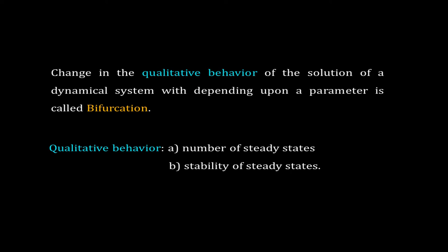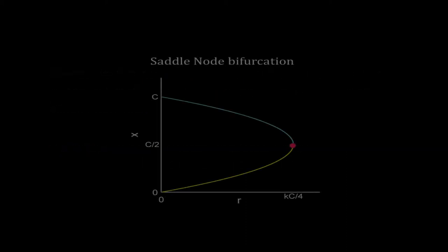I will explain these bifurcations using bifurcation diagrams. Here is the bifurcation diagram of the fish-in-a-tank problem from the last video. The blue line is for stable steady states and the yellow line is for unstable steady states. The bifurcation point is marked by the red dot.